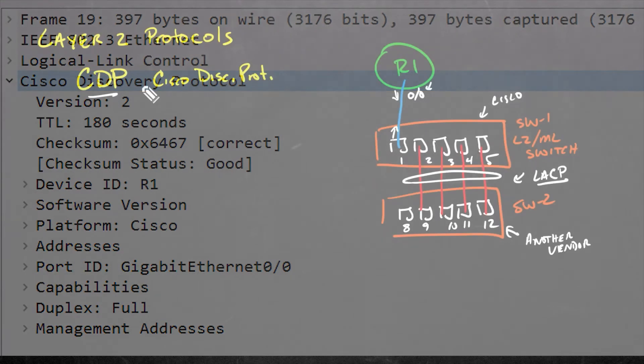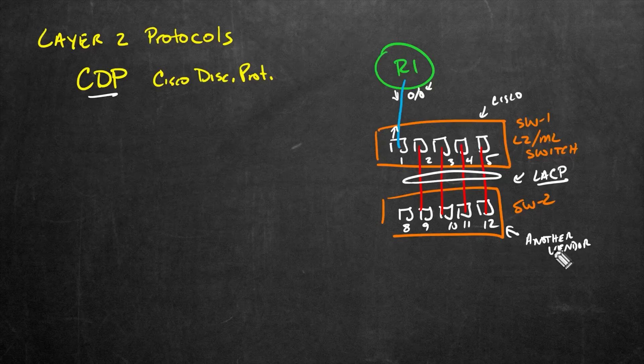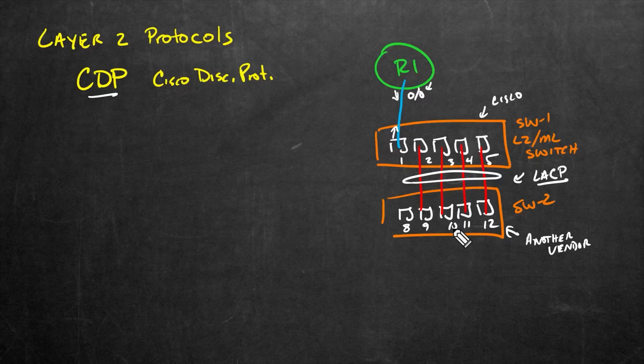However, what is a problem is that with switch one and switch two, because switch two is a different vendor, meaning it's not Cisco, it's very likely that this second switch here, switch number two, does not support CDP. Now some companies do with some of their products like VMware has some products that support CDP, but most vendors do not.